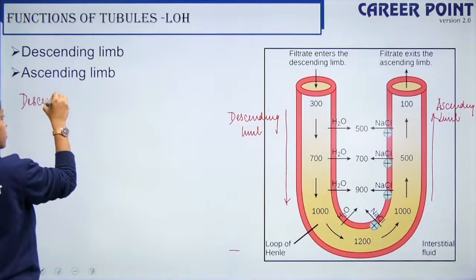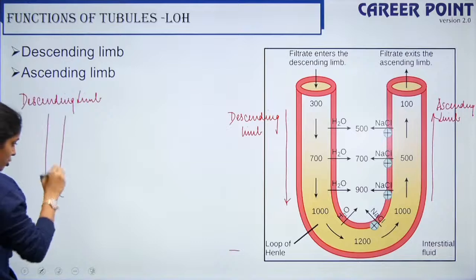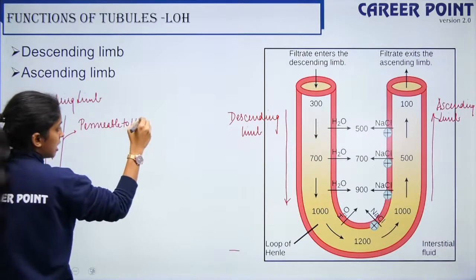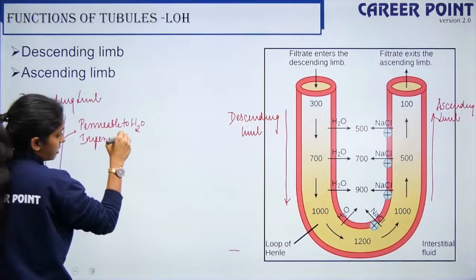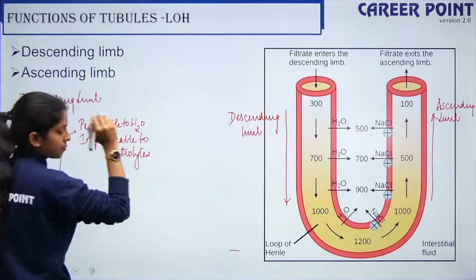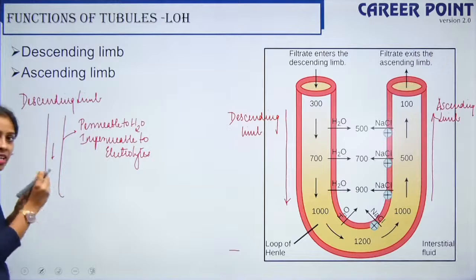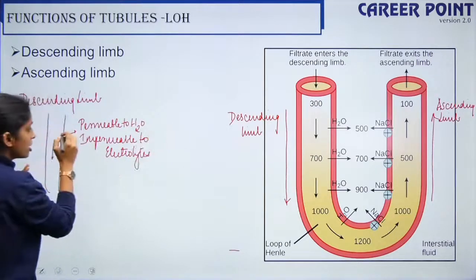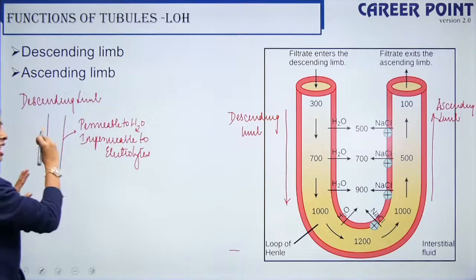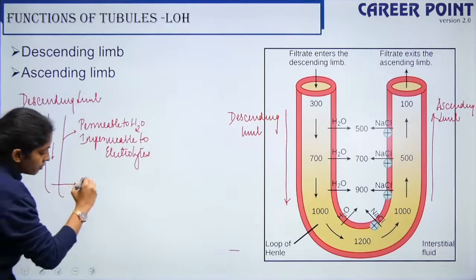The descending limb of the loop of Henley is permeable to water but impermeable to electrolytes. When the filtrate moves inside the descending limb, the water moves out because the tube is permeable to water. After the PCT has reabsorbed most water, whatever little remains moves out, so only electrolytes remain. By the time the filtrate reaches the bottom of the loop, it is concentrated.